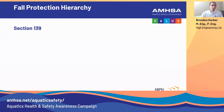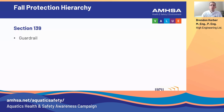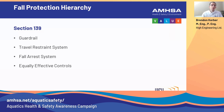The fall protection hierarchy in Section 139 states: first, use a guardrail. If that's not practicable, use a travel restraint system. If that's not practicable, use a fall arrest system. And if none of those three options are practicable, you can use other equally effective controls, which we'll define at the end of the presentation.